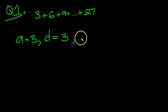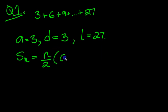We also know the last term is 27. So the formula for the sum of the terms in the sequence, Sn, the one we need to use is n over 2 times a plus l.